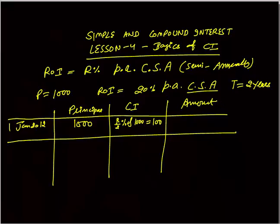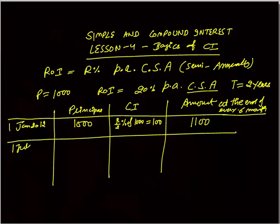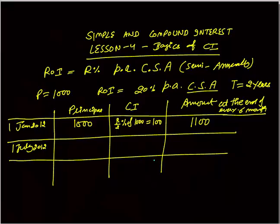So the amount at the end of the first six-month period will be Rs. 1100. Now from 1st July, this 1100 becomes the new principal for the next six months, because your rate of interest is 20% per annum compounding semi-annually.